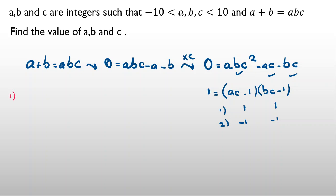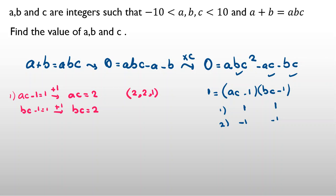In case one, A·C minus one equals one and B·C minus one equals one. Adding one to both sides, A·C equals two and B·C equals two. So since A·C is two and B·C is two, we consider sub-cases: if C is one then A is two, B is two; if C is two then A and B are one; if C is negative one then A and B are negative two; if C is negative two then A and B are negative one. We have only these cases.